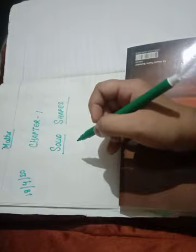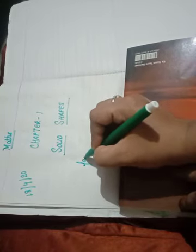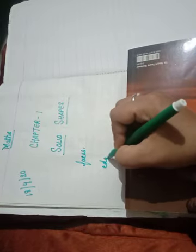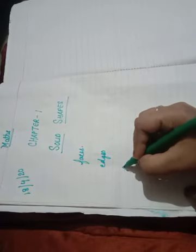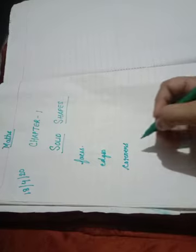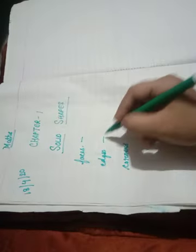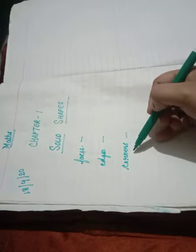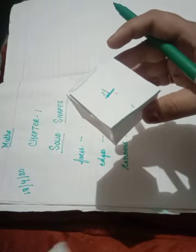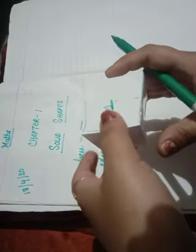Solid shapes are shapes that are not flat. They have different faces, edges, and corners. This is a solid shape which occupies space — if I keep it here, it occupies space. There are many different solid shapes.